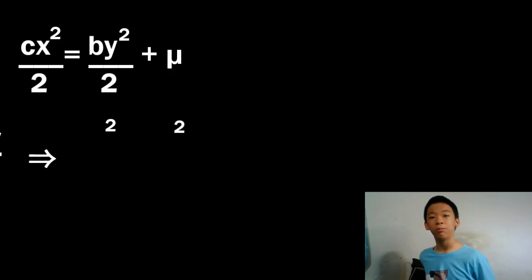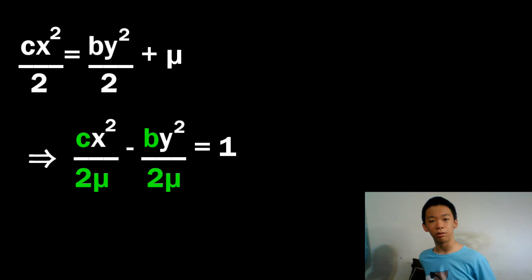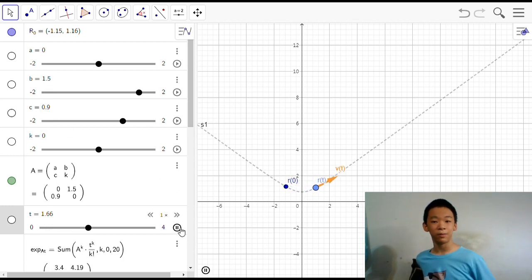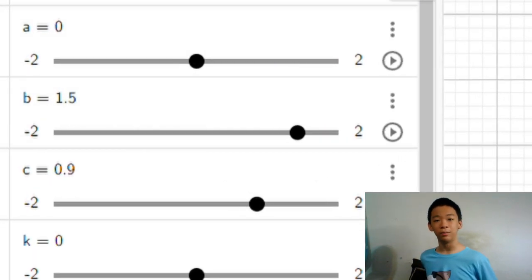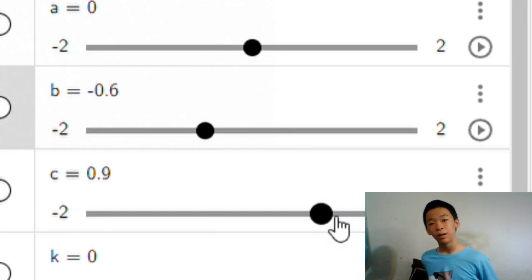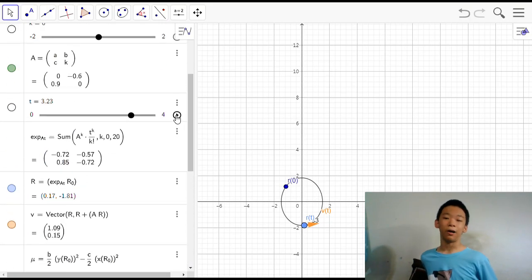Simplifying the equation, we end up with c over 2 mu x squared minus b over 2 mu y squared equals 1. What's really intriguing is that the graph of this is just a conic section. Assuming that mu is positive, if b and c are positive, it's a hyperbola. If c is negative while b is positive, we get an ellipse. How cool is that?